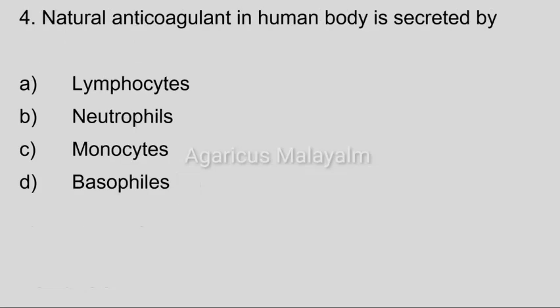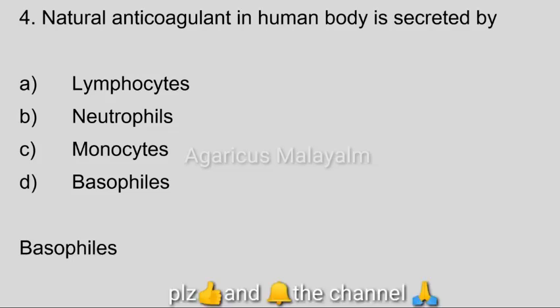Fourth question. Natural anticoagulant in the human body is secreted by: Option A, Lymphocytes; Option B, Neutrophils; Option C, Monocytes; Option D, Basophils. Correct answer: Option D, Basophils. Basophils are granulocytes with irregular-shaped nuclei.